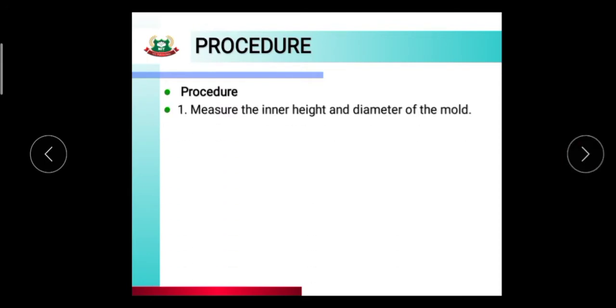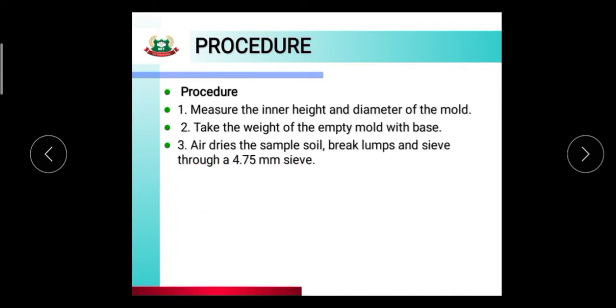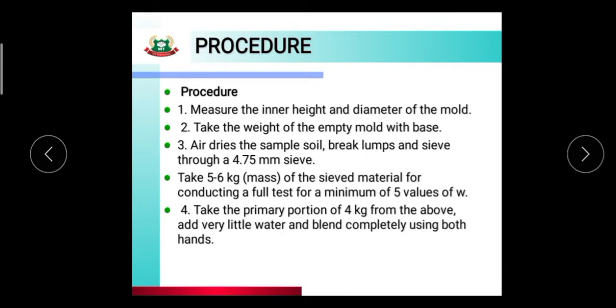Measure the inner height, then take the weight of the empty mold with base. Air dry the sample soil and break lumps. Take 5-6 kg of the sieved material for conducting a full test of minimum 5 values. Take the primary portion of 4 kg from the above, add very little water and blend completely using both hands.